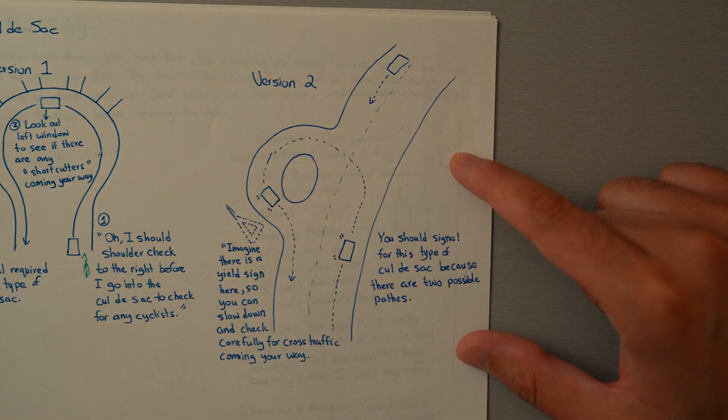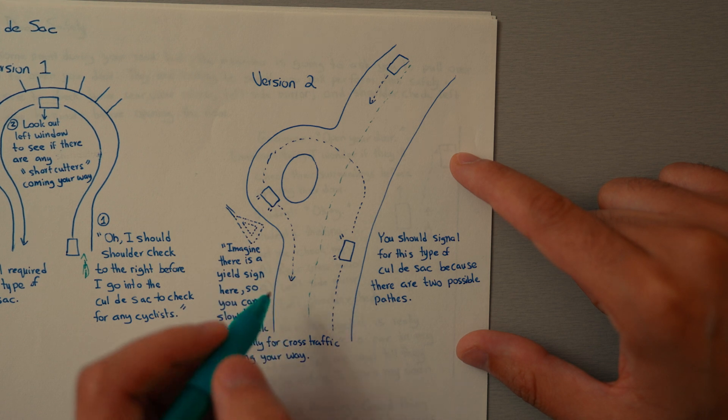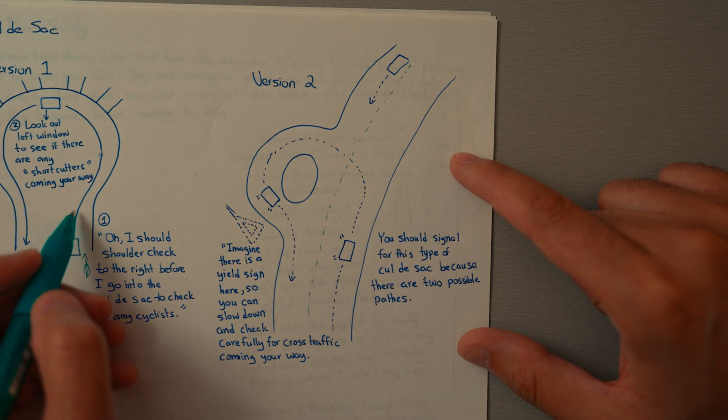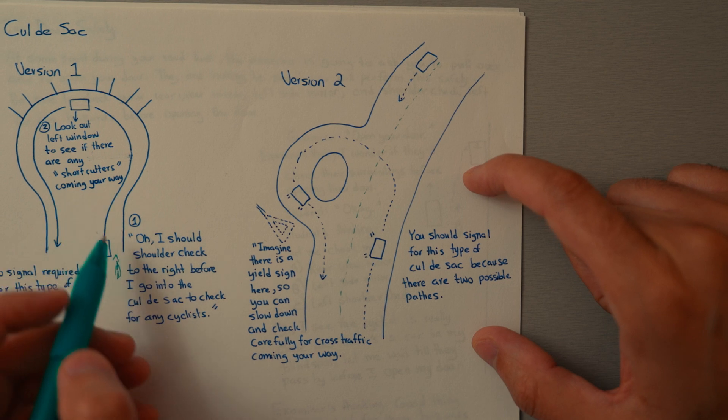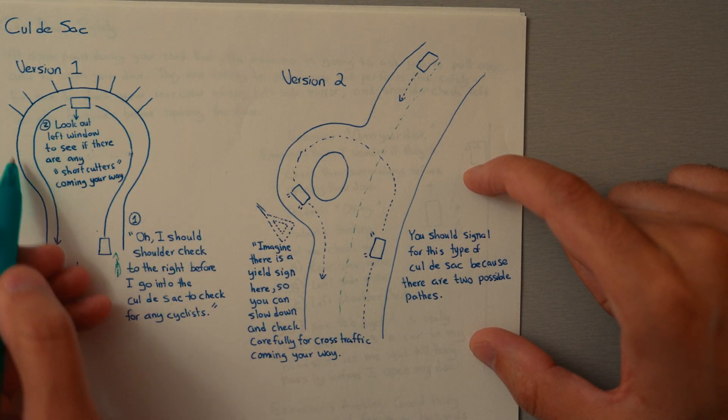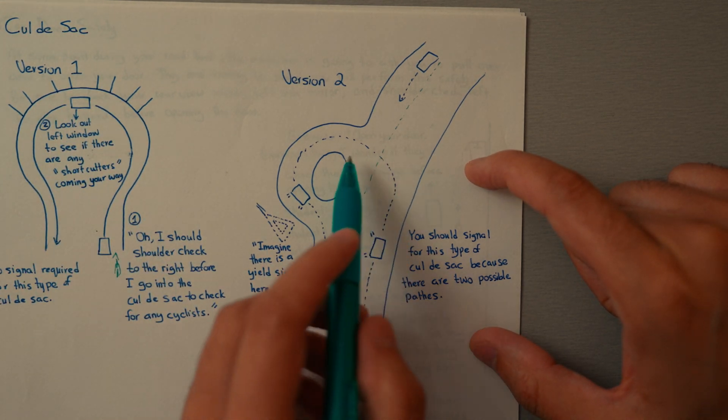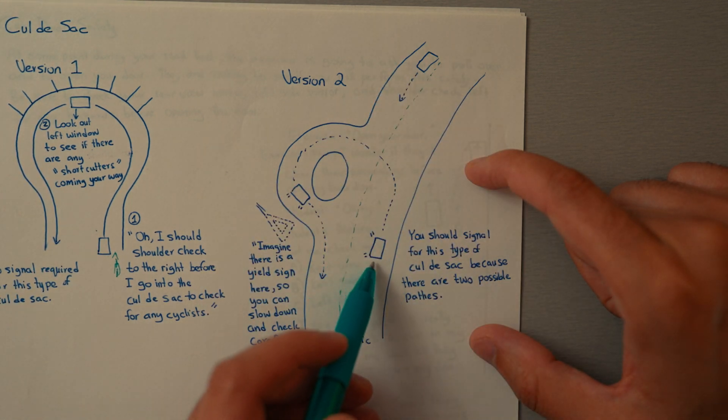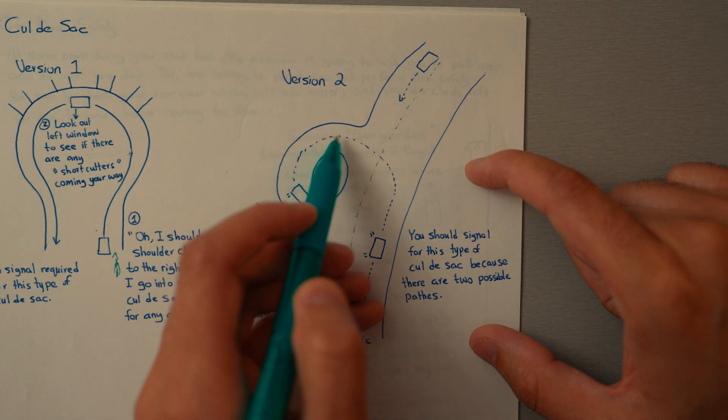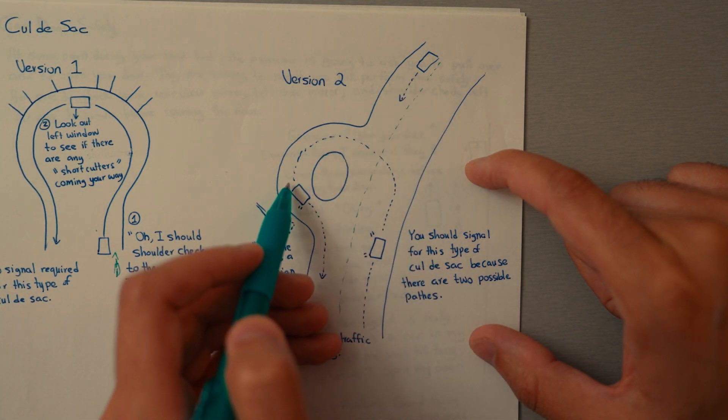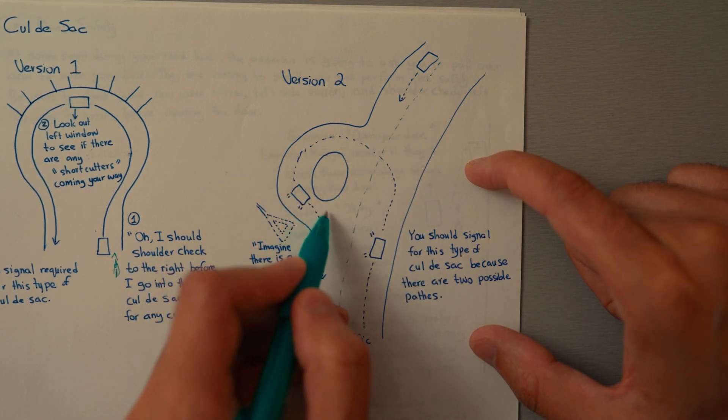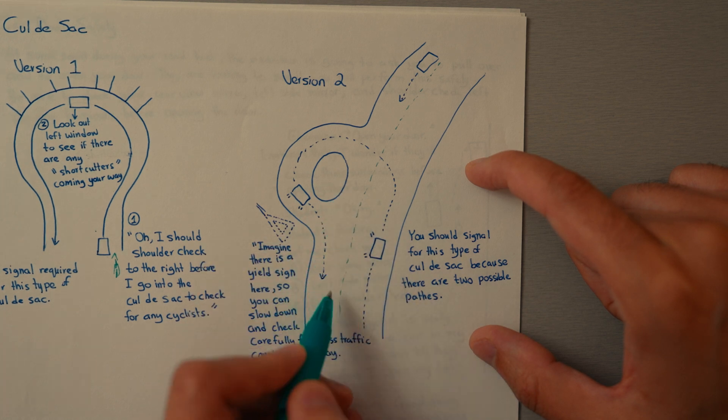These are the two types of cul-de-sacs that I see students deal with on the test. One is pretty straightforward—we're just shoulder checking to the right before we go in and go around. The other one is where I have to also worry about the oncoming traffic as I go into the turn, and then the cross traffic check before I exit. So being ready to yield at this point before I am in anyone's path.